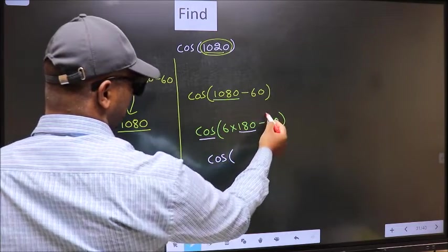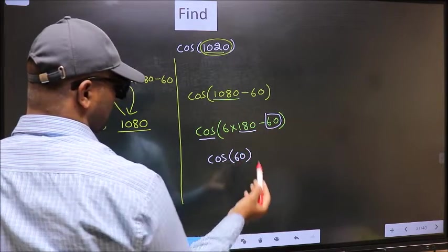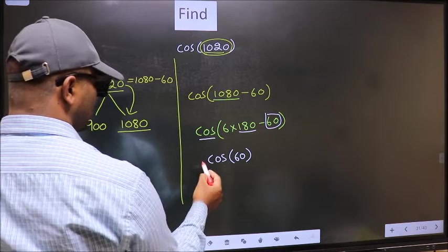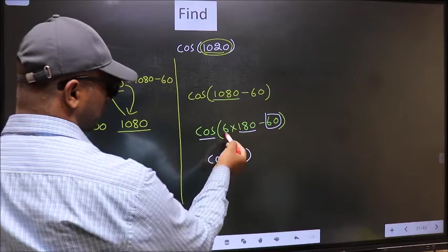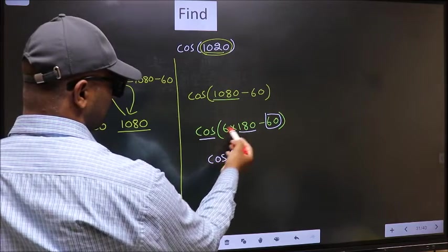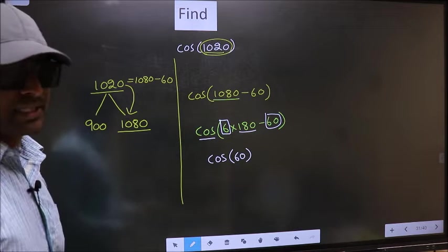And inside, we get this angle 60. Now the question is, will we get here plus or minus? To answer that, we should look at the number before 180. That is 6. And 6 is even.